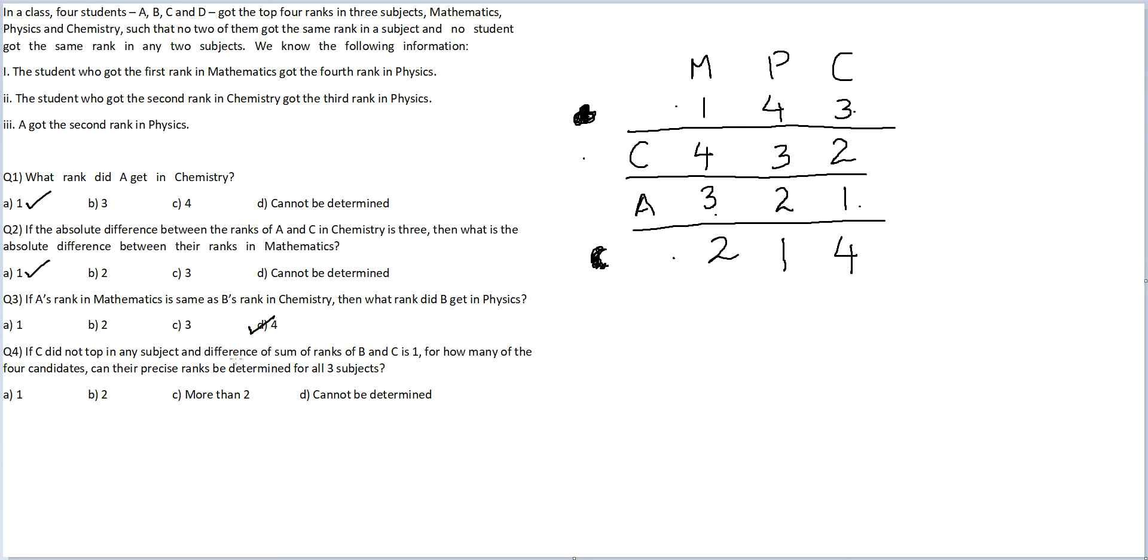And the difference of sum of ranks of B and C is 1. Sum of ranks of C is 9. Sum of ranks of this person is 8. Sum of ranks of this person is 7. We have been told. Sum of ranks for A is 6. Difference of sum of ranks of C and B is 1. 9 and 8. So this is B. Now, there is just one person left. So this is D.